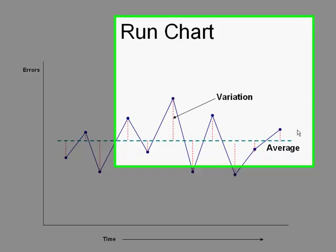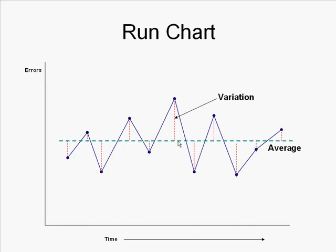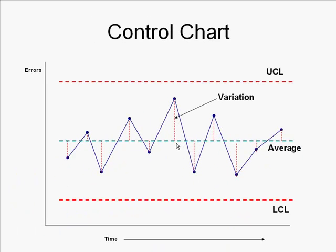So a control chart begins, we start looking at the variation. So how far is each point from the center line? And if we take that bit of data, it turns into what's called the standard deviation. And that allows us to calculate an upper control limit and a lower control limit. And this type of chart would be known as a Levi Jennings chart.